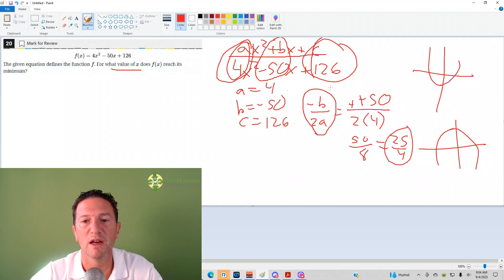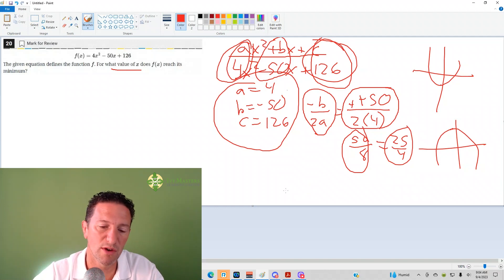a is 4, b is negative 50, c is 26. I've got that all written down here. So when you do negative b over 2a, you get negative negative 50, which turns into positive 50 over 2 times 4. 50 over 8 reduces to 25 over 4.